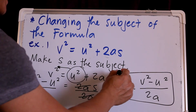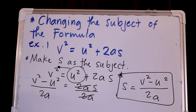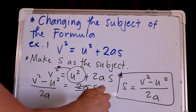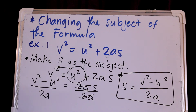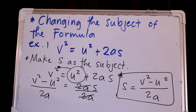So then we can say that S equals V squared minus U squared, all over 2A. This is our formula for solving for S. When we change the subject of the formula, we also make our formula as simple as it can be.